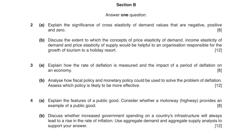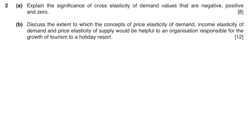This is what section B looks like. They give you three options out of which you have to choose one, and it will be split with an 8 mark and a 12 marker, so it's 20 marks in total. I'm going to be doing question number 2 in this video. The question is: explain the significance of cross elasticity of demand values that are negative, positive and zero.